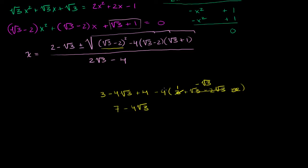My brain is starting to hurt. So you have negative 4 times 1, so it's minus 4. And then negative 4 times negative square root of 3 is plus 4 square roots of 3 — and thank God something has finally simplified here. That cancels out with that, and so you have 7 minus 4 equal to 3.